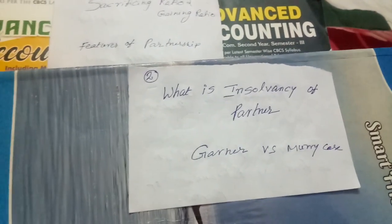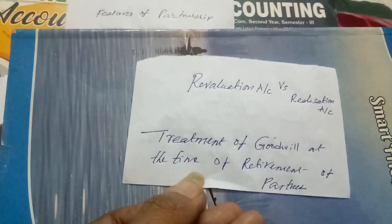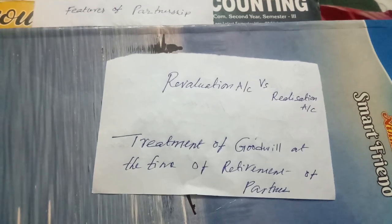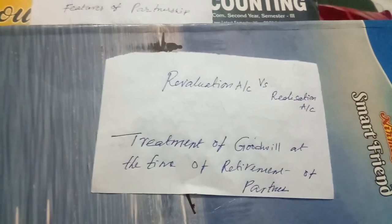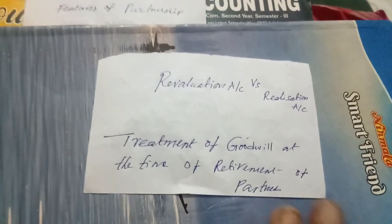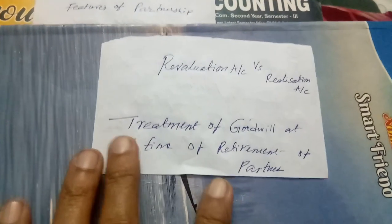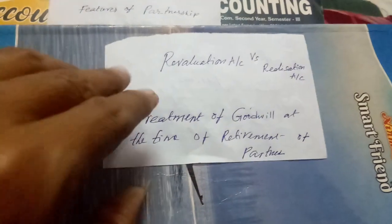Coming to the second unit: insolvency of partner and dissolution. Write about the Garner vs Murray case and revaluation account versus realization account. Revaluation account is prepared at the time of admission, retirement, and death, while realization account is prepared at the time of dissolution and insolvency of partner. Also cover treatment of goodwill at the time of retirement of a partner.